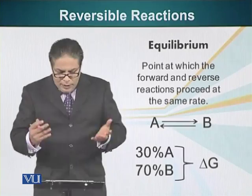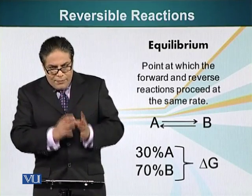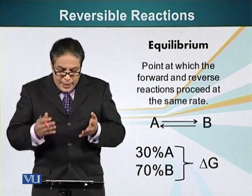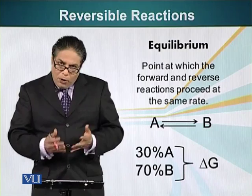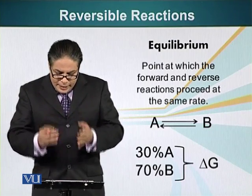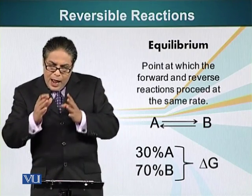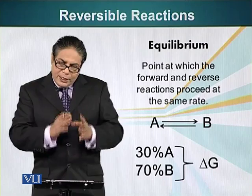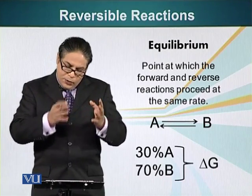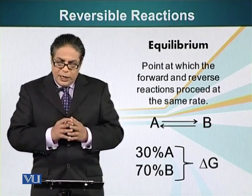Let's look at a hypothetical example. A is converting into B, and B can also convert back to A. In this case, the process of A converting into B is exergonic — it is releasing energy. How much A gets converted into B and how much B gets converted into A is a function of delta G, the free energy.